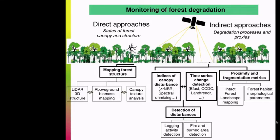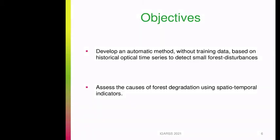Such methods usually rely on independent datasets to validate but also to calibrate the models developed, and these studies do not provide information about the causes of degradation. Thus, the objectives of this study are to develop an automatic method without training data, based on historical optical time series, to detect small forest disturbances and assess the causes of forest degradation using spatio-temporal indicators.